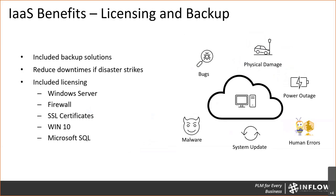Key benefits of IaaS: licensing is included — Windows Server licensing, Windows 10, firewalls, Microsoft SQL — all baked into your cost. It's predictable and you don't have to keep track of renewals. Backup is also included. We typically do a 30-day rolling backup, meaning on the 31st day your first backup is deleted and it keeps rolling. In case disaster strikes, it's very easy to grab any one of those 30 backups, bring up a new machine, and get going right away.